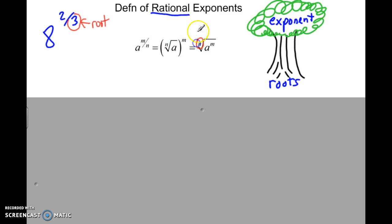That means the root, the n, the n out here will be down below. So when we take that root or index out here, it's always down below in the fraction.